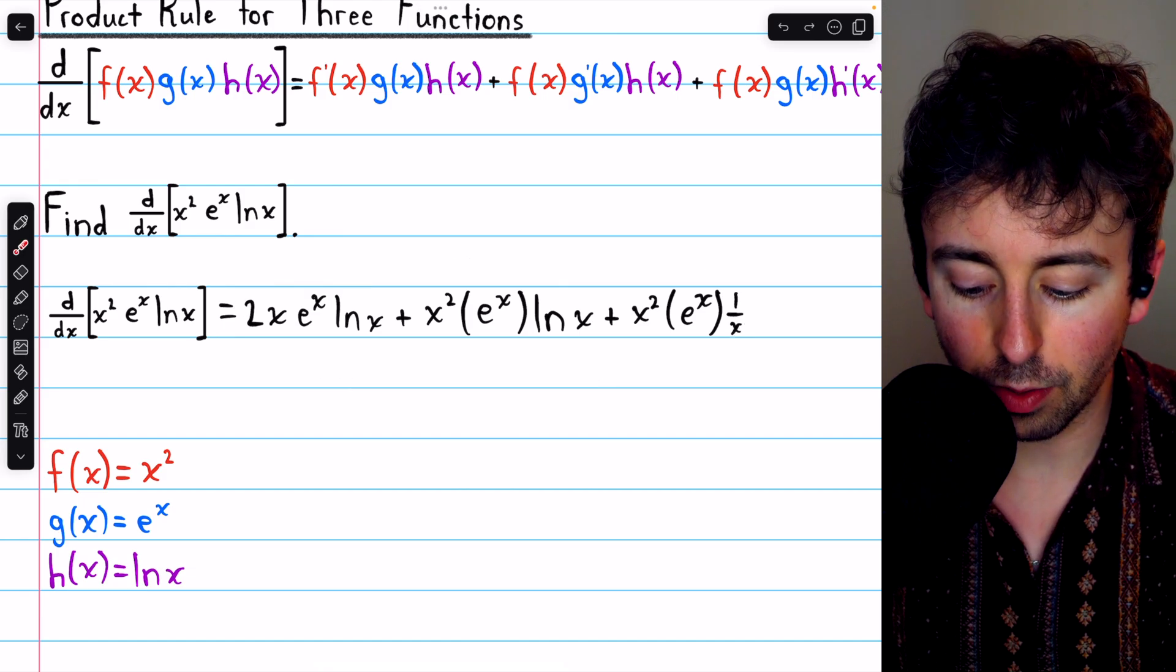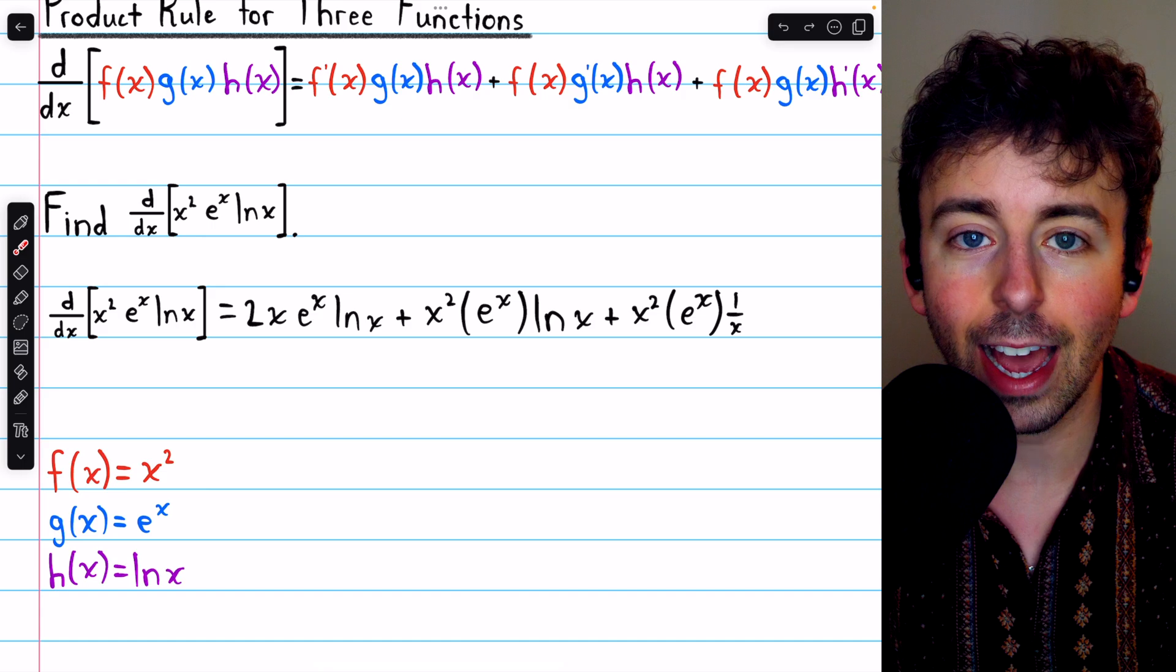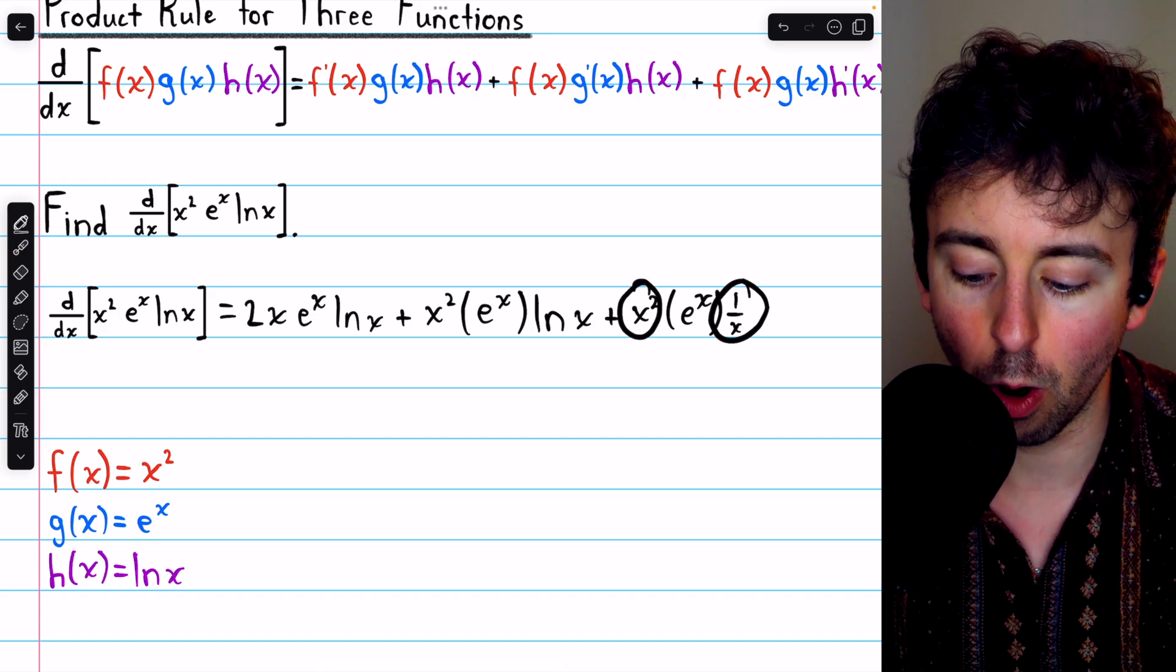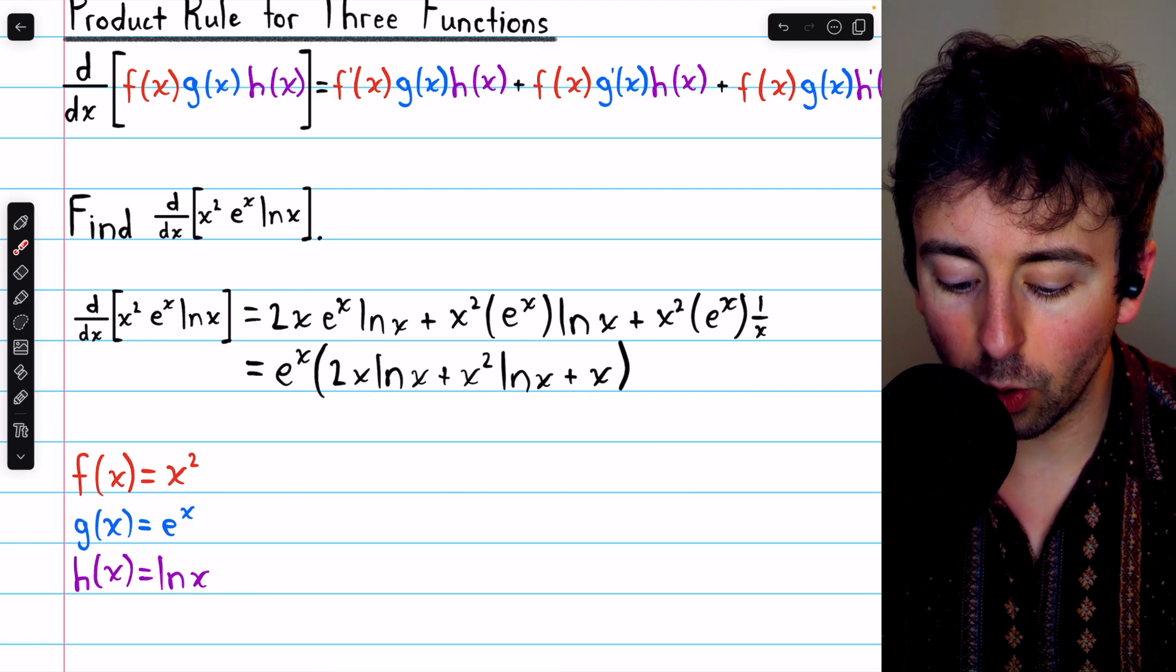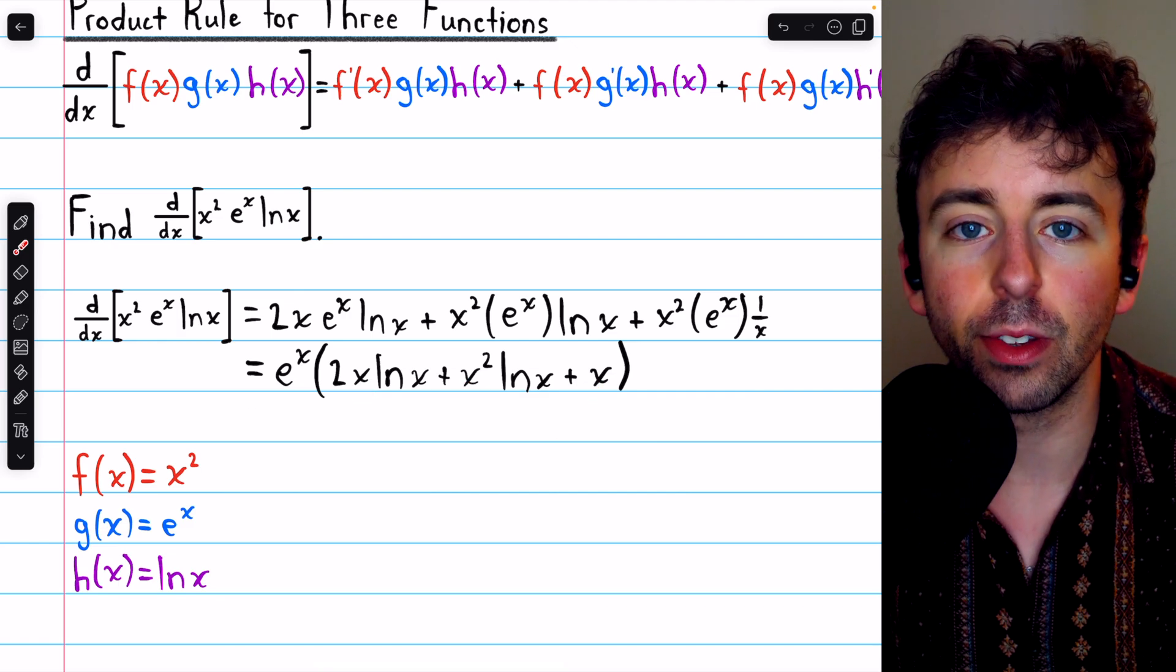The last thing we might do is factor out an e to the x, since each term has a factor of e to the x. And then of course, we can also cancel an x with that 1 over x. And after doing that, we also have a factor of x in each term. So let's factor that out as well.